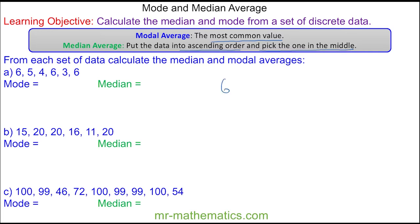For question A, we have this data here and you can see the most common value is 6, so 6 is the modal average. To work out the median, we need to arrange the data in ascending order, which means from smallest to biggest. So we have a 3 and a 4, a 5 and a 6, and two more sixes.